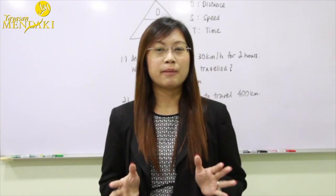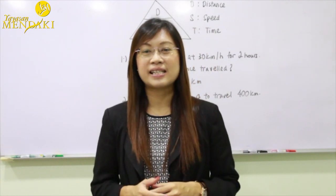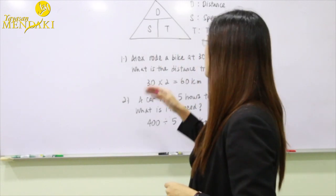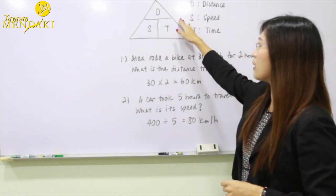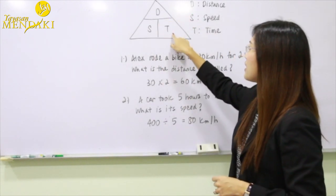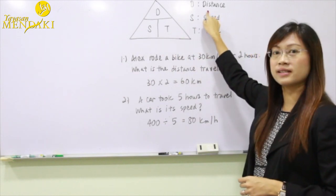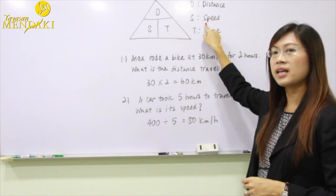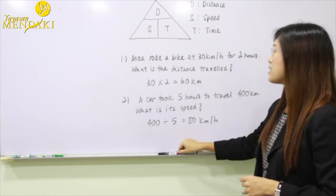To solve the speed problem sum questions, we're going to use the DST method. On the board, we can see there's this triangle to represent D, S and T, where D represents the distance, S represents the speed, and T represents the time.